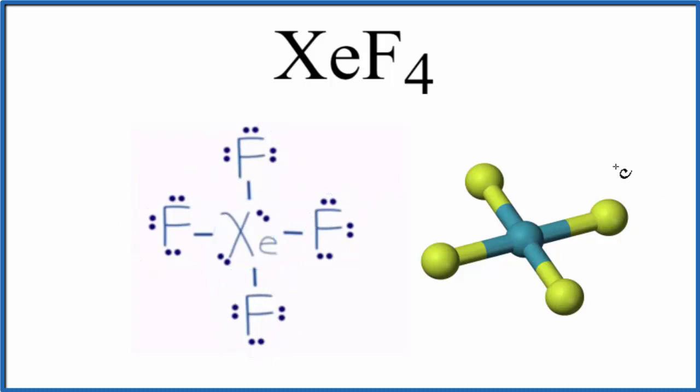If we look at the molecular geometry here for XeF4, we can see it spread out. There would be a lone pair of electrons up here and then underneath, but they're not drawn here in the structure.